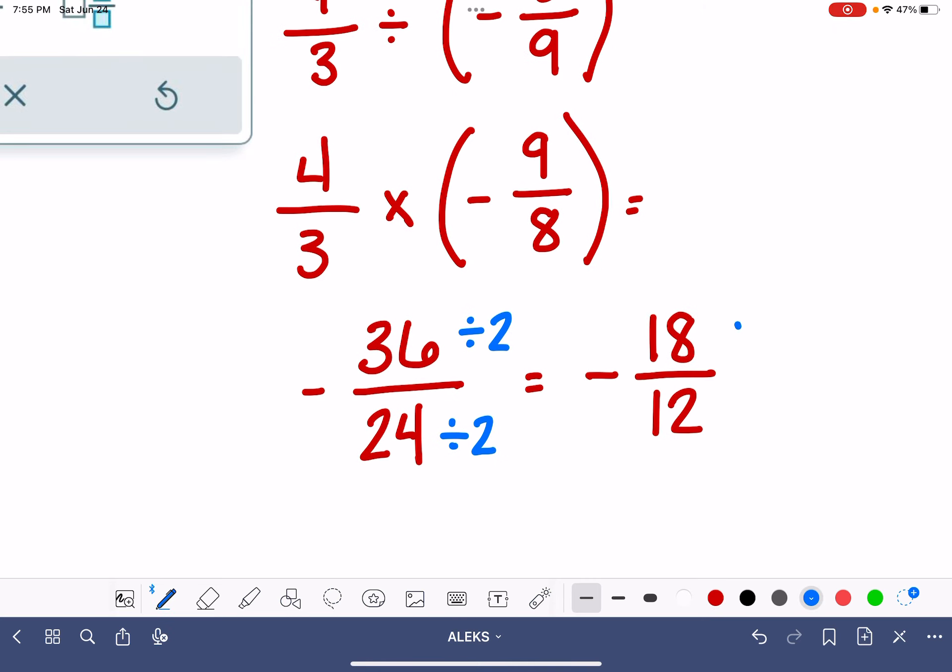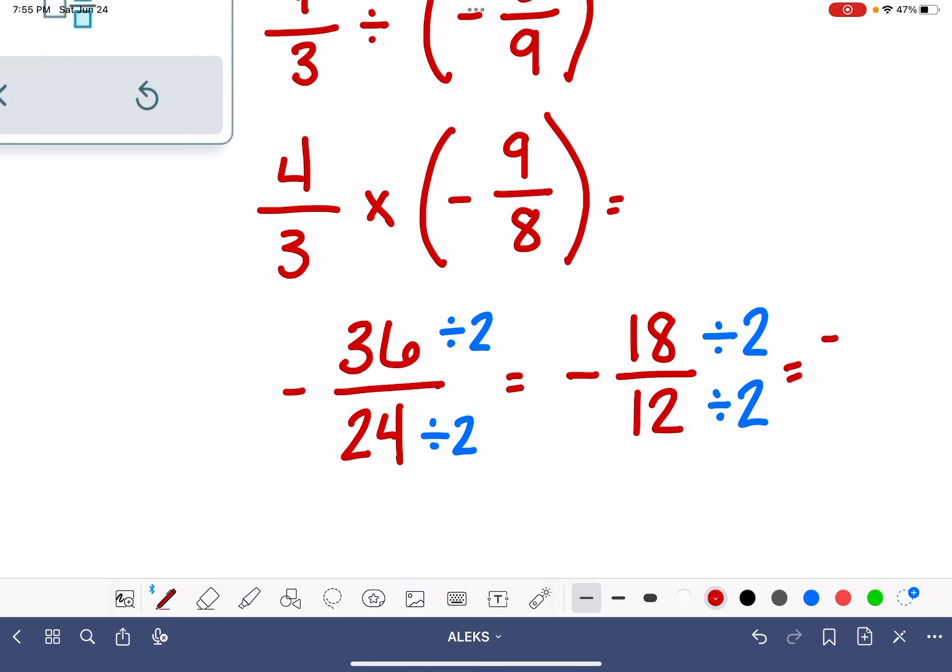But let's pretend like you can't see that and you just try 2 again, because you can just keep trying any number and see what you get after each try. So if we divide by 2, that's going to give us negative 9/6.